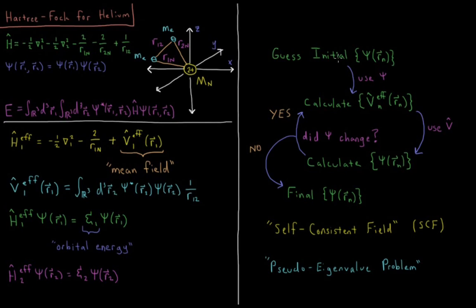For this chicken-and-egg problem between operator and orbital, we simply guess an initial orbital for each electron. We use that orbital to calculate an effective mean field potential, which gives us our operator. Using the mean field, we calculate the operator and obtain new wave functions. Using the new wave functions, we get a new mean field operator, and we check whether our orbitals changed. If they did, we use the new mean field, calculate new orbitals, compute a new operator, and check again. If they did not change, then we have reached our final orbitals and final wave function.